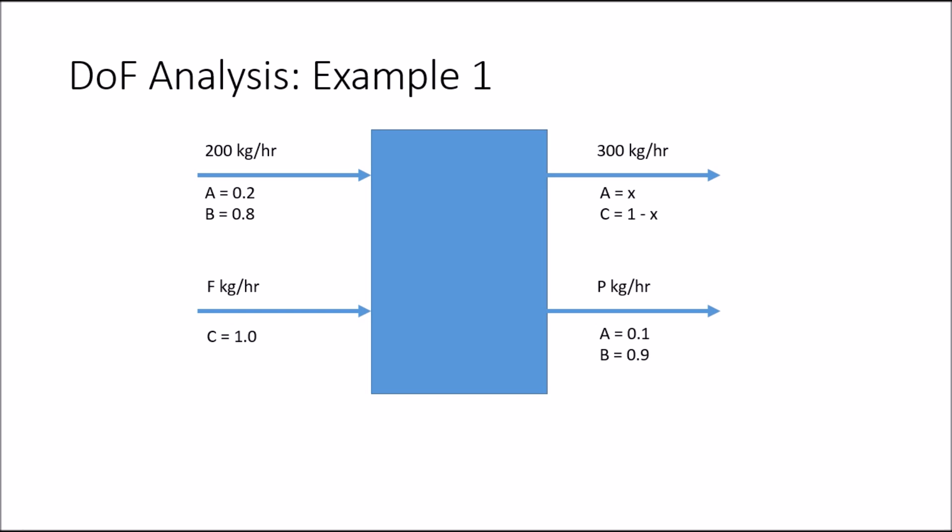Let's apply this to two examples of material balances on single units. In the first example, we have a single unit process with two inputs and two outputs. To calculate degrees of freedom, we need the number of unknowns as well as the number of balances we can write. Looking at the flow chart, we have one unknown flow rate on the input side, one unknown composition variable on the output side, and one more unknown flow rate P. So with F, x, and P, we have three unknowns.